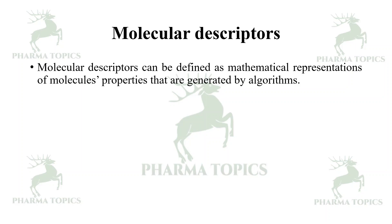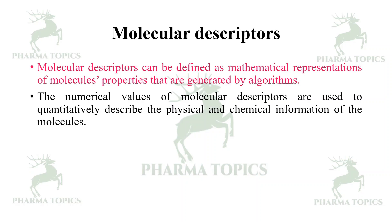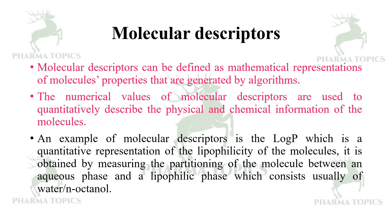Molecular descriptors can be defined as mathematical representations of molecular properties generated by algorithms. The numerical values of molecular descriptors quantitatively describe the physical and chemical information of molecules. An example is log P, which is a quantitative representation of lipophilicity — obtained by measuring the partitioning of a molecule between an aqueous phase and a lipophilic phase, usually water and n-octanol.